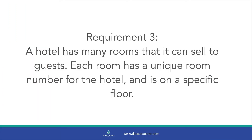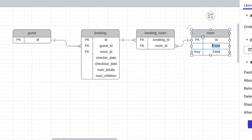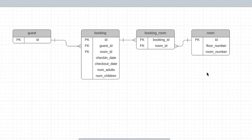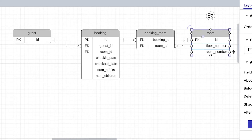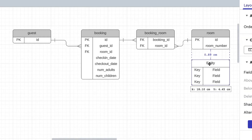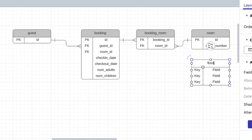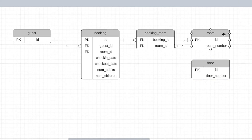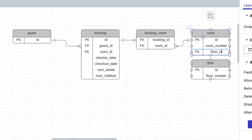Requirement 3 is about rooms. There are many rooms and they have a room number and a floor. In our diagram we can add more attributes to the room table — a floor number and a room number. However, since there are a limited number of floors and we may want to capture information about a floor separately, I'll create a separate floor table with an ID and a floor number column. We can link this to the room record using a foreign key. Requirement 3 is now met.